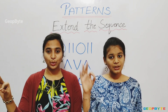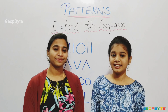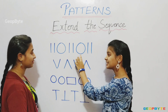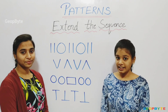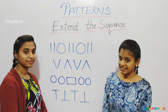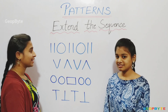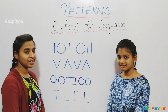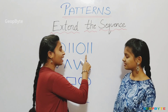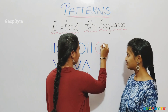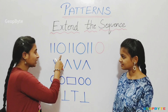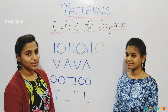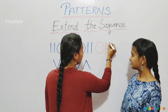Extend the sequence. See here — there are two lines: circle, two lines, circle, and two lines. After two lines, which shape comes? Circle or two lines? Let us see. After two lines, we have a circle. So, we get a circle after two lines. And again, after circle, we have two lines. So, after circle, we get two lines.